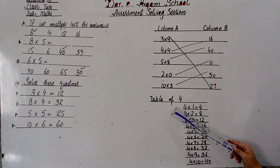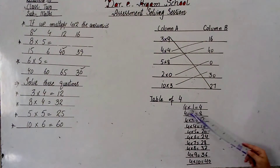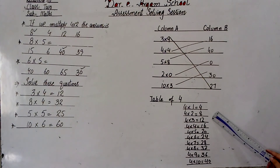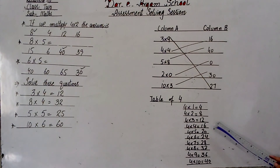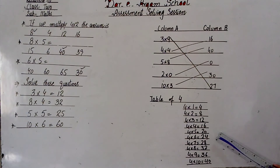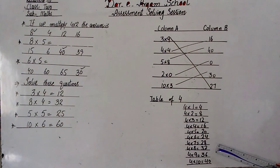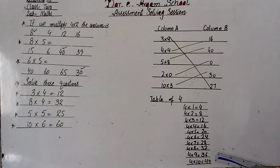The last one is the table of 4. 4 ones are 4. 4 twos are 8. 4 threes are 12. 4 fours are 16. 4 fives are 20. 4 sixes are 24. 4 sevens are 28. 4 eights are 32. 4 nines are 36. 4 tens are 40.